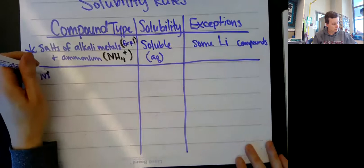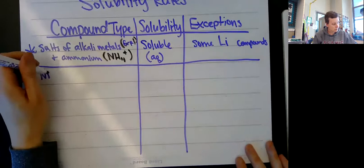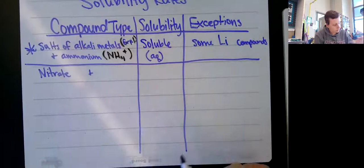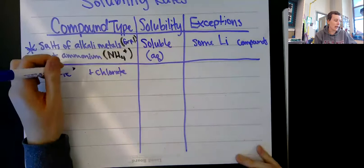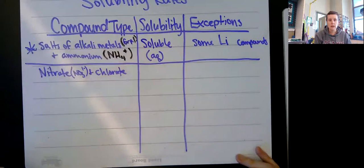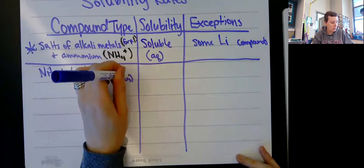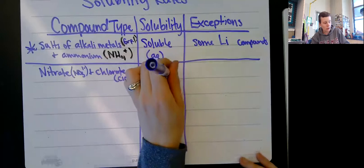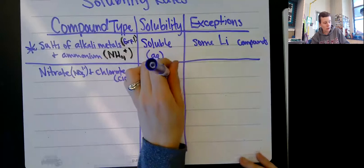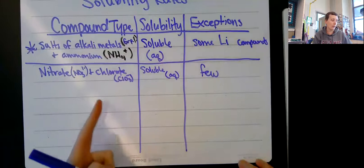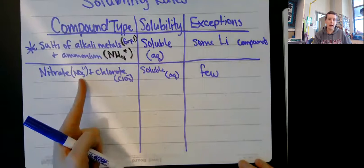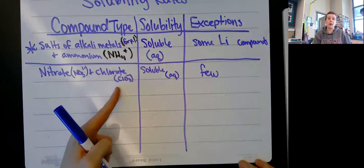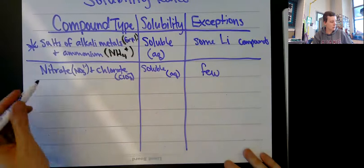Second: nitrate and chlorate. Nitrate is NO3 one-minus; chlorate is ClO3 one-minus. They are soluble, with very few exceptions, which means they're aqueous in a single replacement or a double replacement reaction. Any compound that ends with NO3 is soluble - lead nitrate, copper nitrate, calcium nitrate. Anything that ends in chlorate is soluble. So those single and double replacement compounds are going to be aqueous.